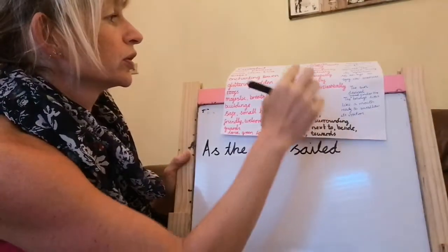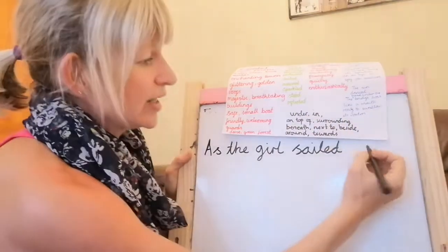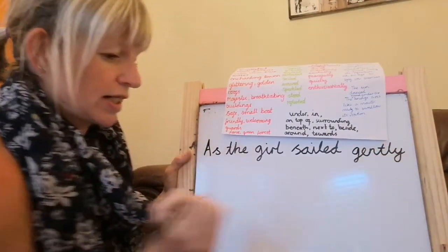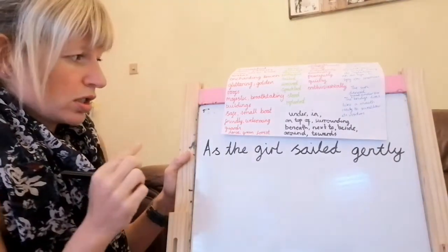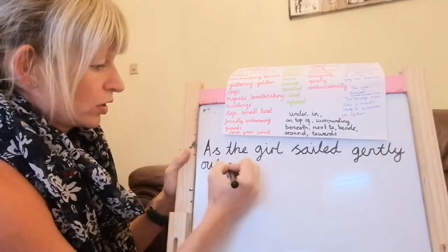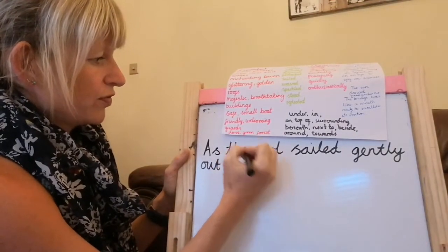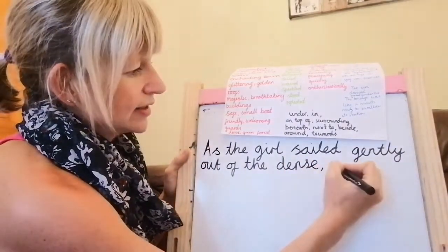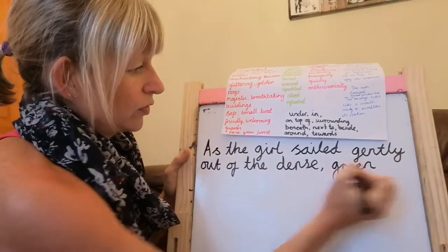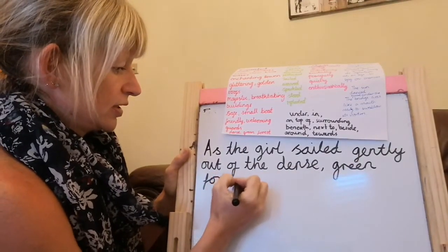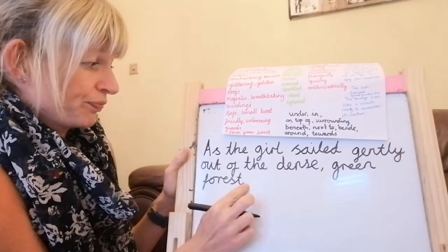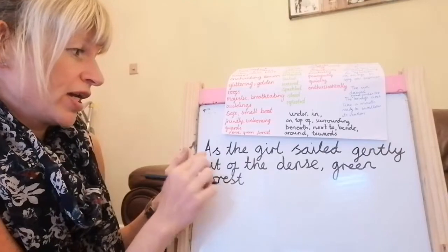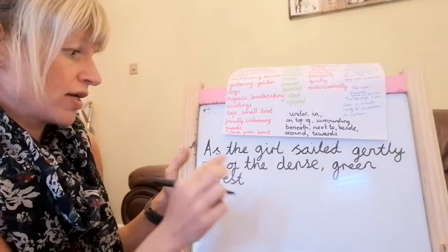And how did she sail? Looking at my adverbs — gently. As the girl sailed gently out of... where did she sail out of? The dense green forest. That's the expanded noun phrase: dense, comma for list, green forest. This is a subordinate clause because I've got the conjunction 'as' there. As the girl sailed gently out of the dense green forest...